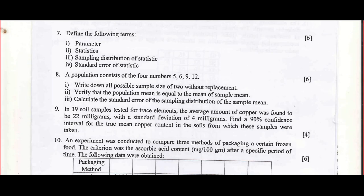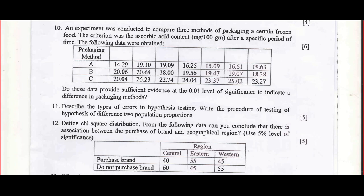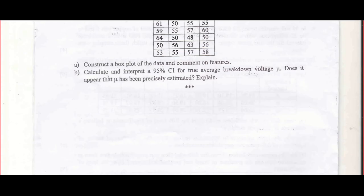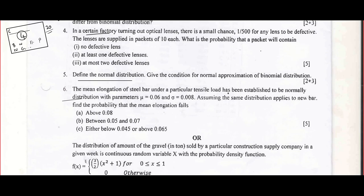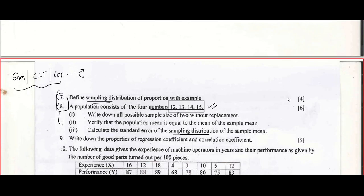So you can see here they are asking pure definitions: what is the parameter, what is statistics, what is sampling distribution, standard error, etc. So that will be another approximately 5 plus 5, 10 marks. But here I am seeing 6 plus 6 — that is good news. But normally in question papers I see those questions being 5 plus 5, and here it is 4 plus 6. Anyway, let's say it is approximately 10 marks.